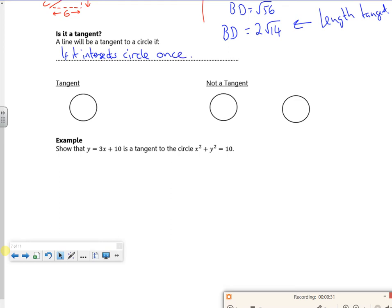So if it intersects the circle once, so a tangent if it just touches. So it's not a tangent if it's got two points crossing. So this one here I'm looking at in terms of the discriminant.